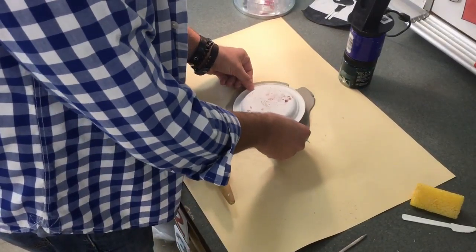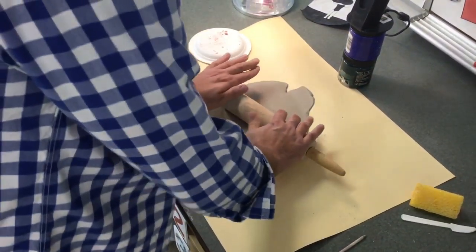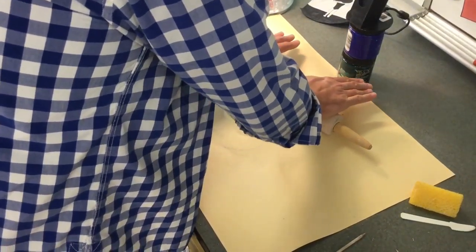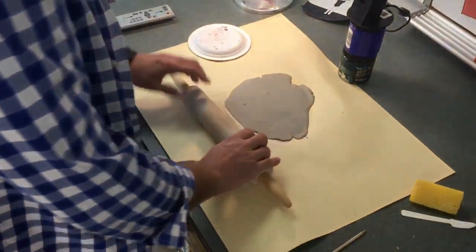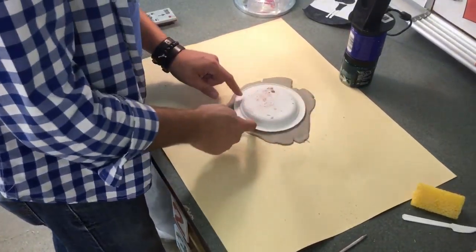And now I'm going to check. Is it big enough? Almost. Give it another roll up here in the corner. Now my clay is large enough that I can cut out a circle.